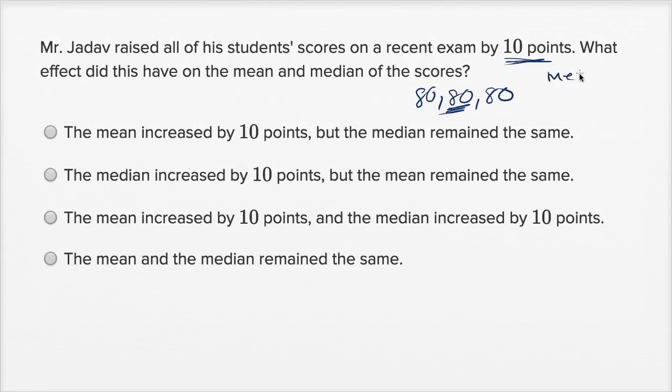So both median is equal to 80 here, and the mean is equal to 80. Now, if you add a 10 to all of these, then it becomes a 90, a 90, and a 90. And then your median and mean are both going to become 90. Median is going to be equal to the mean, which is going to be equal to 90.